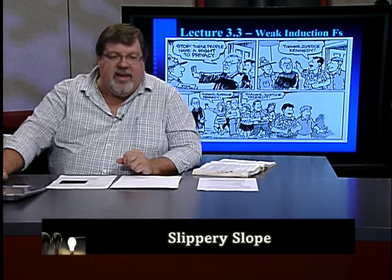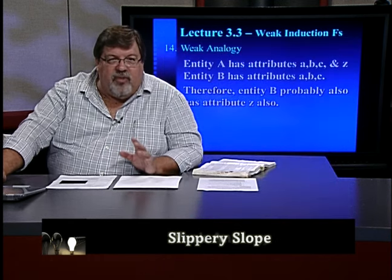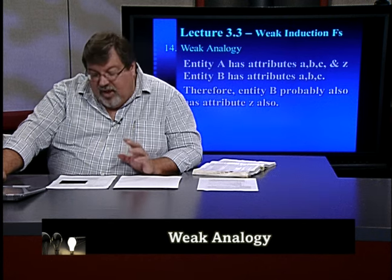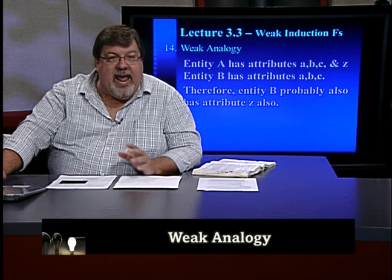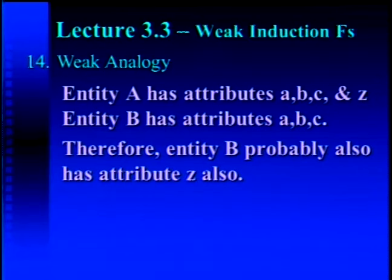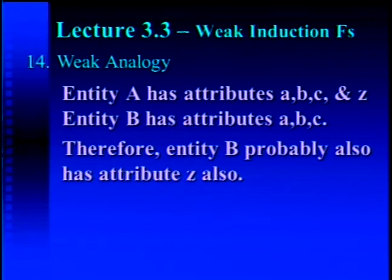After slippery slope, we're on to the weak analogy fallacy. This fallacy is committed when the analogy is not strong enough to support the conclusion drawn. For example: entity A has attributes A, B, C, and Z; entity B has attributes A, B, and C; therefore, entity B probably also has attribute Z. This is not necessarily the case — the analogy isn't strong enough. Just because there are similarities in some areas doesn't mean something necessarily has to have them in all areas.